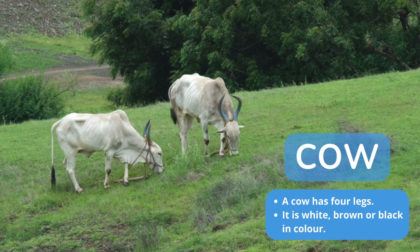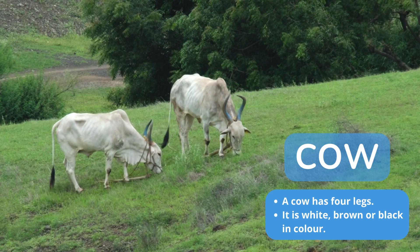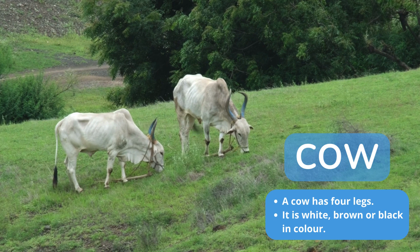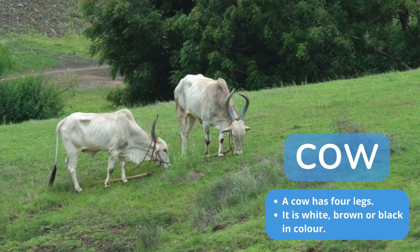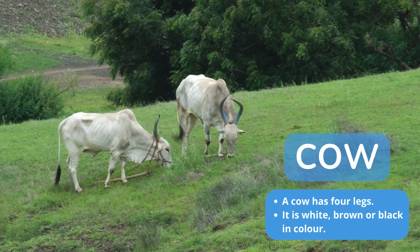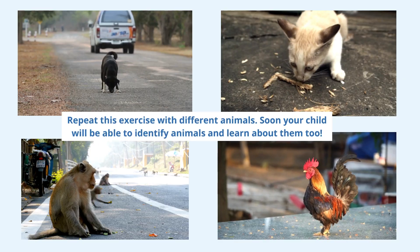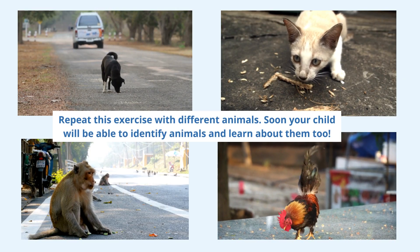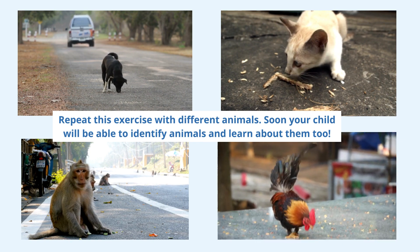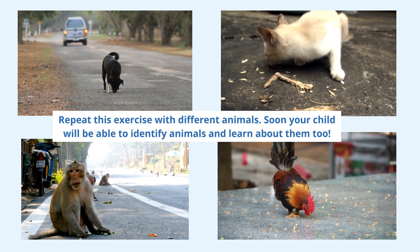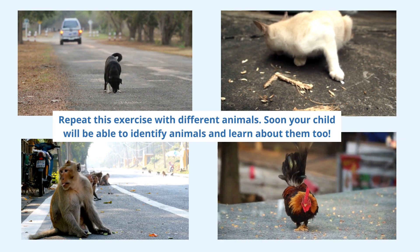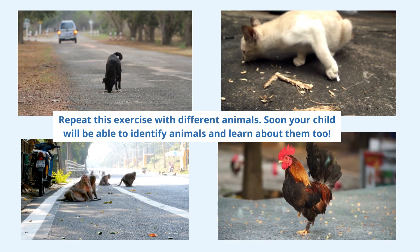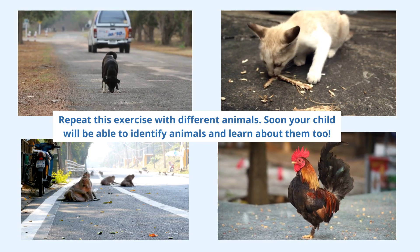You can tell them a cow has four legs, it is white, brown and black in color. Repeat this exercise with different animals. Soon your child will be able to identify animals and learn about them too.